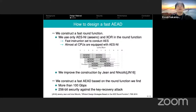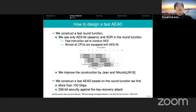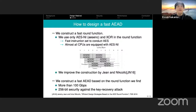To design a fast AEAD: the speed of a sponge-based AEAD depends on the speed of its round function, so we first construct the fastest round function. We only use AES-NI and XOR as internal operations, both of which can be executed very fast. Among AES-NI operations, we only use AESENC, which conducts one round of AES (not the last round). We also improve the Jean and Nikolić construction and method, which is about how to construct an efficient AES-based round function for AEADs.